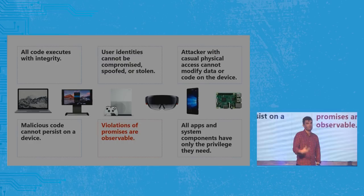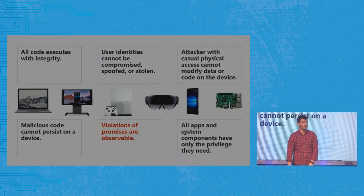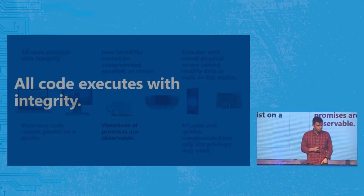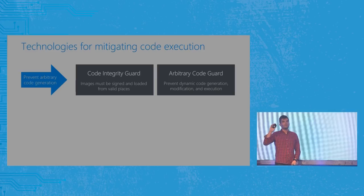This is the north star for Windows security. Let's talk about how we're achieving it. For 'all code executes with integrity,' we have a four-pillared strategy. The first is we want to prevent arbitrary code from running.